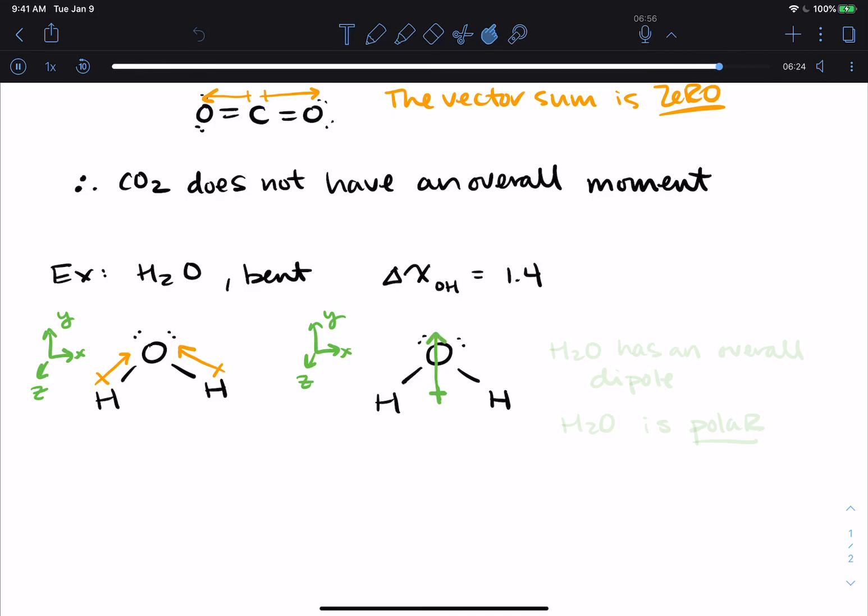Those two vectors added give me a molecular dipole. It's written here in green. So H2O has an overall dipole, and in this case, it's actually pretty large. We consider water to be a polar molecule.